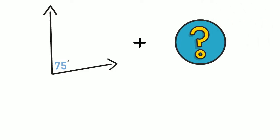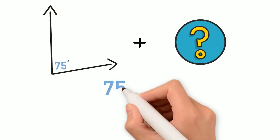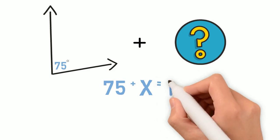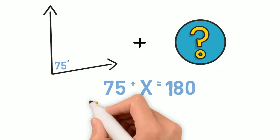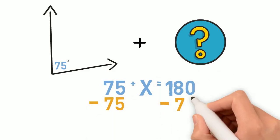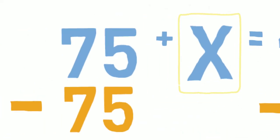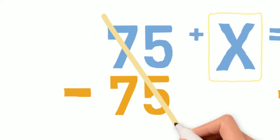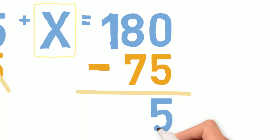Let's turn it into an equation and solve. 75 plus some number x equals 180. Subtract 75 from each side to isolate x. So 75 minus 75 makes a zero pair, and 180 minus 75 equals 105.